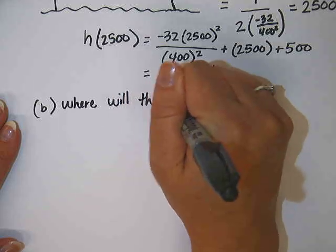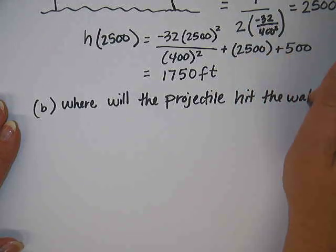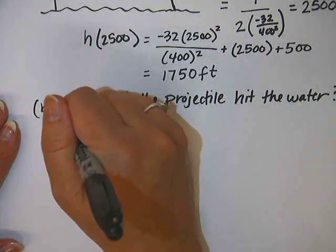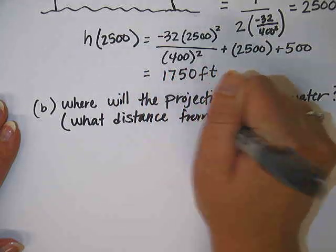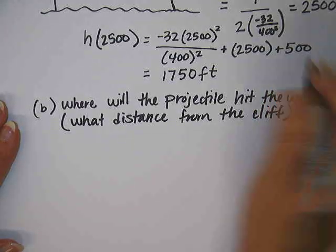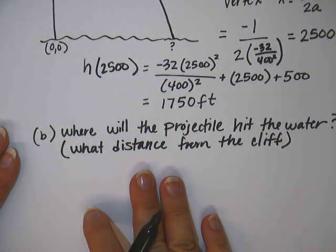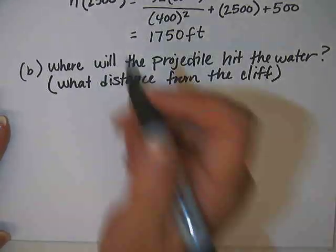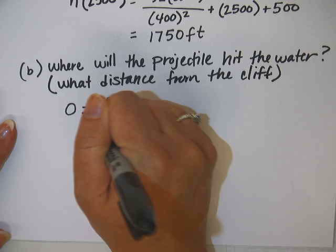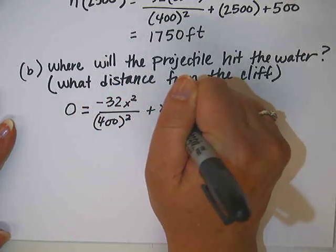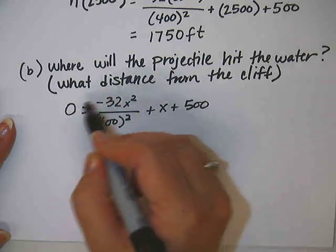So here's the question then. Where will the projectile hit the water? The question we're looking for is what distance from the cliff? Because the bottom of our cliff here, that's where 0, 0 is. And we want to know where that point is right there. Okay, so we take our function and set it equal to 0. Negative 32 x squared over 400 squared plus x plus 500.